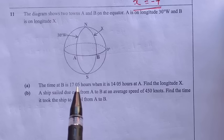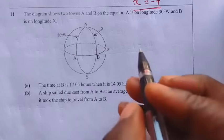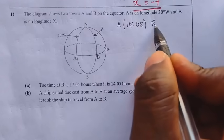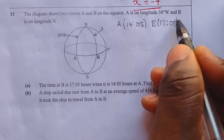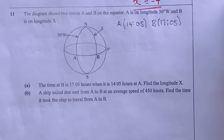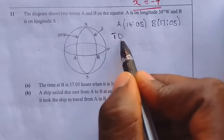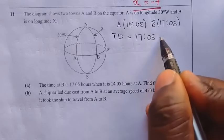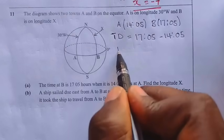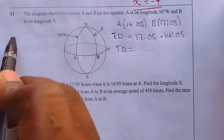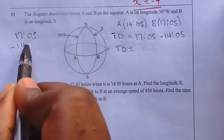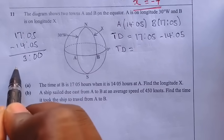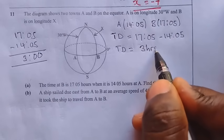First, we are going to find the time difference between point A and point B. We have been told that at A the time was 1405, while at point B the time is 1705. So the time difference is 1705 minus 1405. Five minus five is zero, seven minus four is three — so the time difference is three hours.